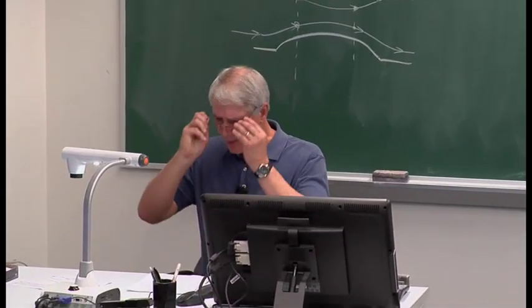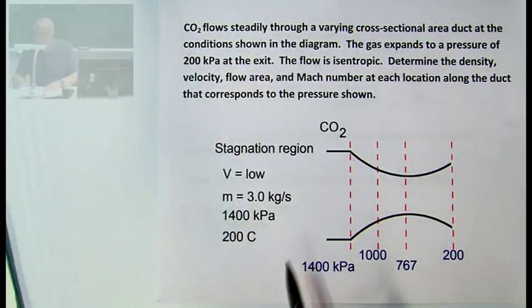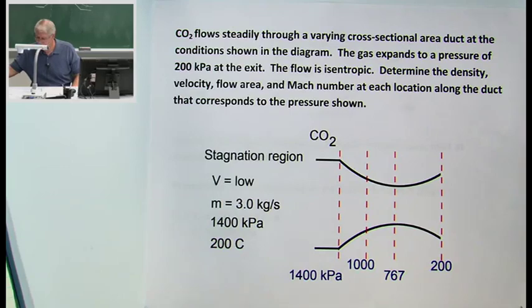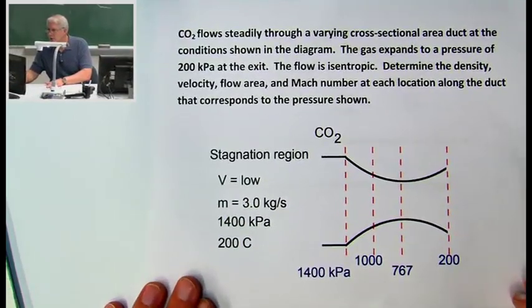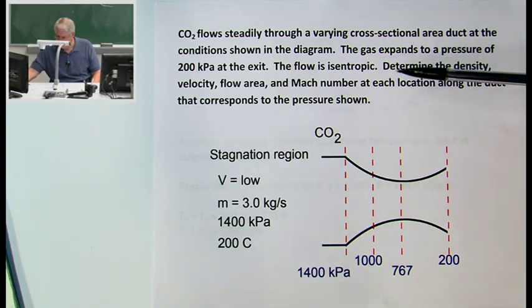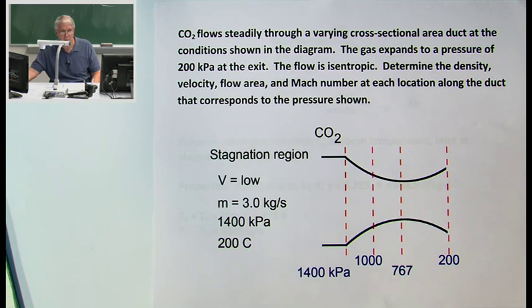Now I'm going to start with an example, and I think you're going to see some surprising results. We have carbon dioxide flowing steadily through a varying cross-section area duct. The gas expands to a pressure of 200 kPa at the exit. The flow is isentropic, and we're asked to determine the density, velocity, flow area, and Mach number at each location along the duct that corresponds to the pressure shown.